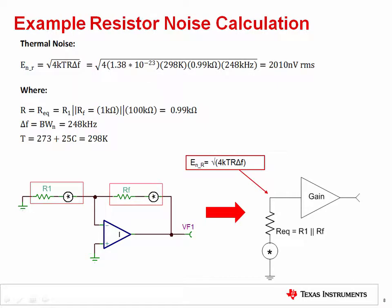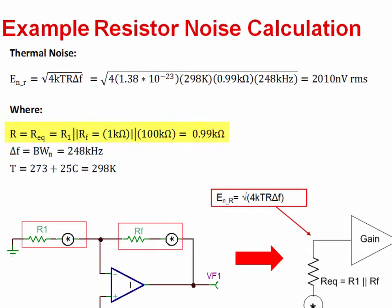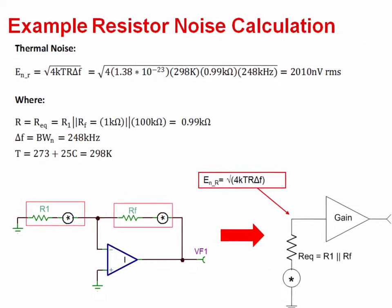Let's now finish up by calculating the circuit's resistor thermal noise, also called Johnson noise. We use the equivalent resistance to do this, which again is just under 1 kilo-ohm. And after plugging in our values into the equation from the previous video, we get a result of 2,010 nanovolts RMS. This is actually a significant amount of noise.